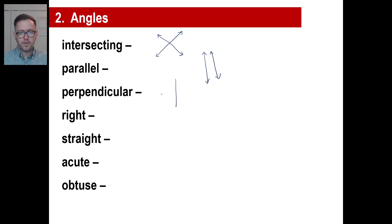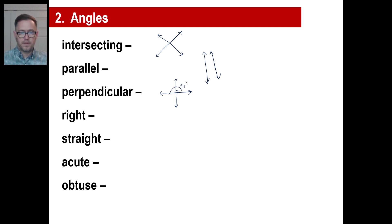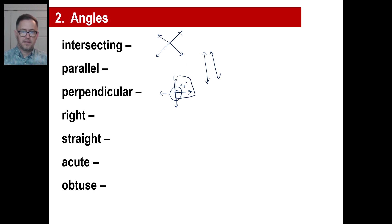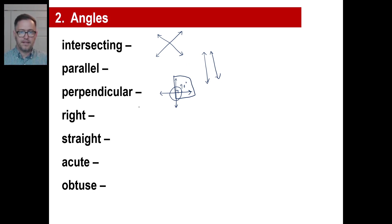Perpendicular lines look like this, and they cross each other in what's called a right angle. A right angle is indicated by that symbol — it is a 90 degree angle. If you go all the way around that would be 90, 180, 270, and then 360 degrees like a circle. A right angle is made by two perpendicular lines and the value of that angle is 90 degrees.